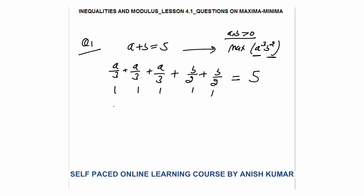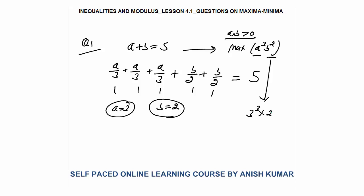So a/3 must equal 1, which means a equals 3. And b/2 equals 1, so b equals 2. The product is maximum: 3³ × 2² = 27 × 4 = 108, which is your final answer.